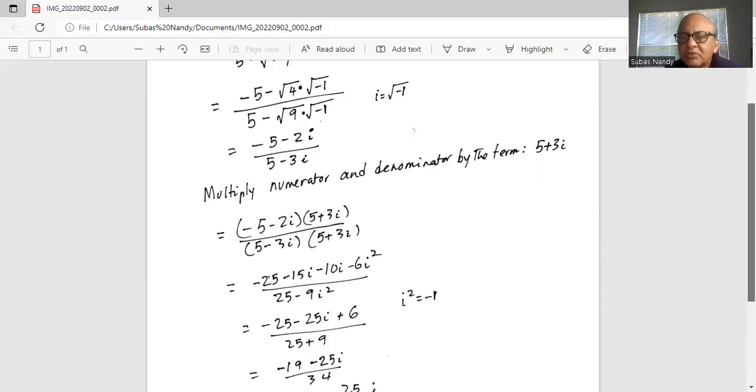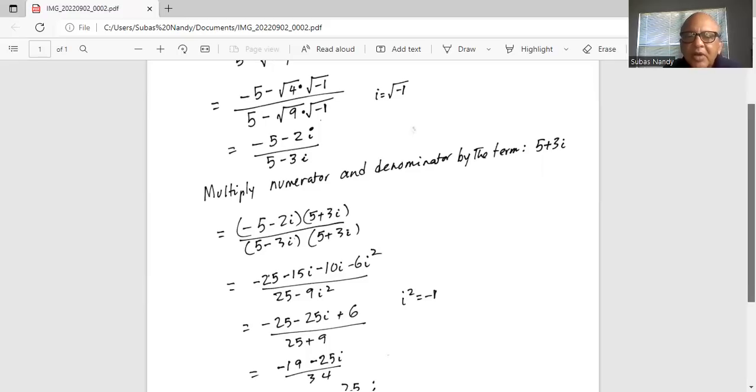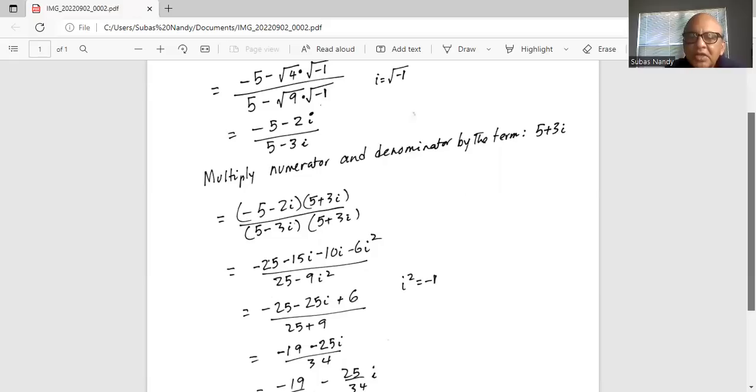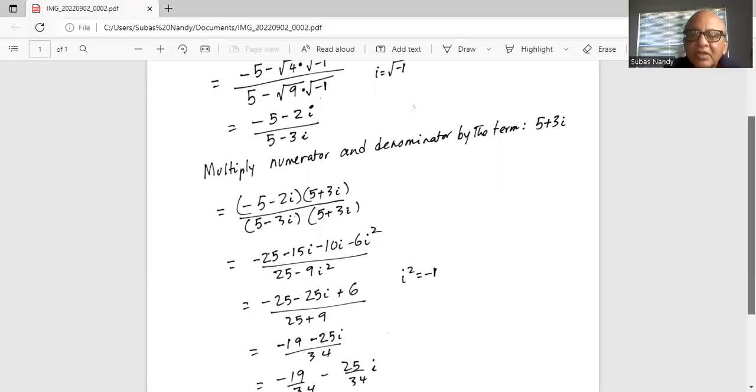Hence, we will substitute minus 1 for i squared. So it becomes the numerator minus 25, then minus 15i minus 10i, both negative, so they add up minus 25i. And then minus 6i squared, i squared itself is minus 1. So minus 6 times minus 1 becomes plus 6. Similarly, in the denominator it is 25 minus 9i squared. Minus 9 times minus 1 is plus 9.